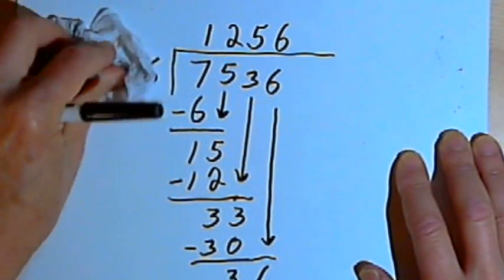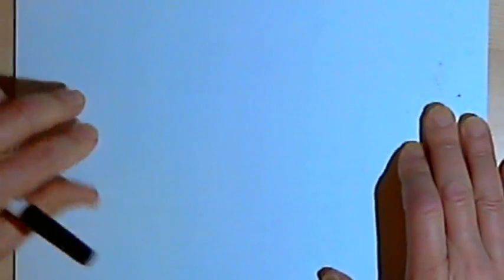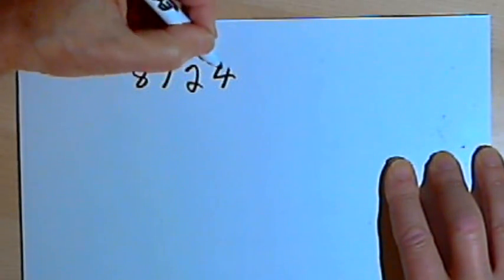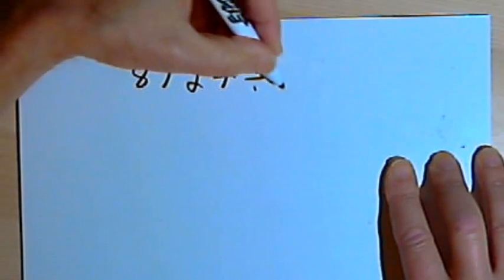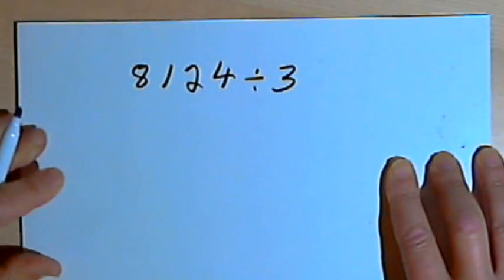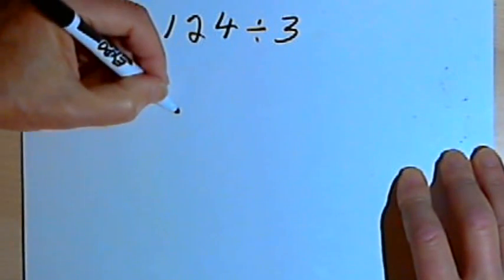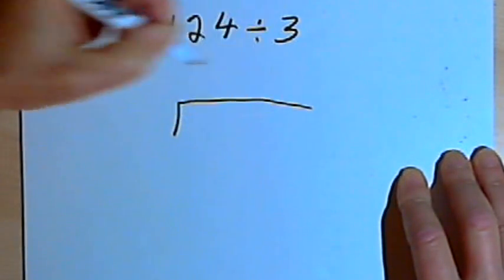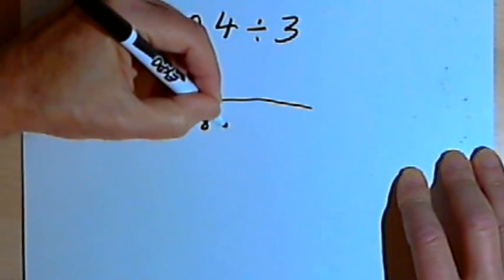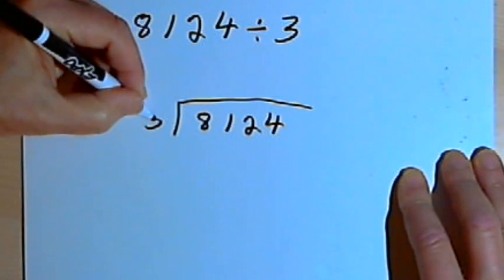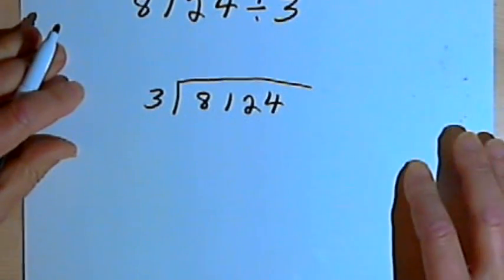Just to cover some unusual situations we might run into. So let's try 8,124, and let's divide that by 3. So let's see what happens. I'll put 8,124 into this box, 3 is my divisor, so that's outside the box.